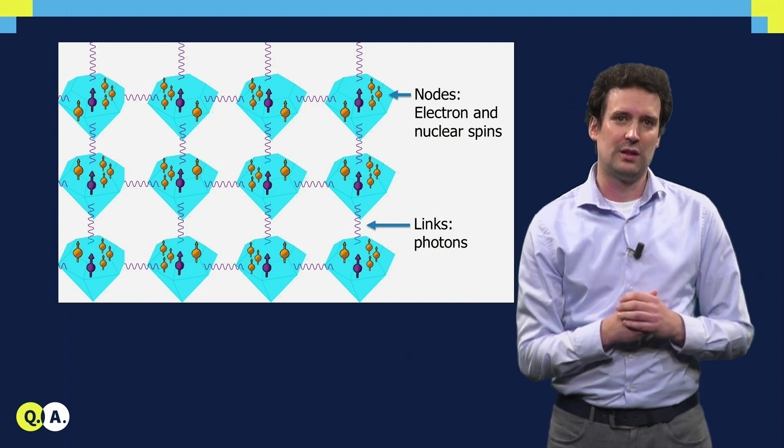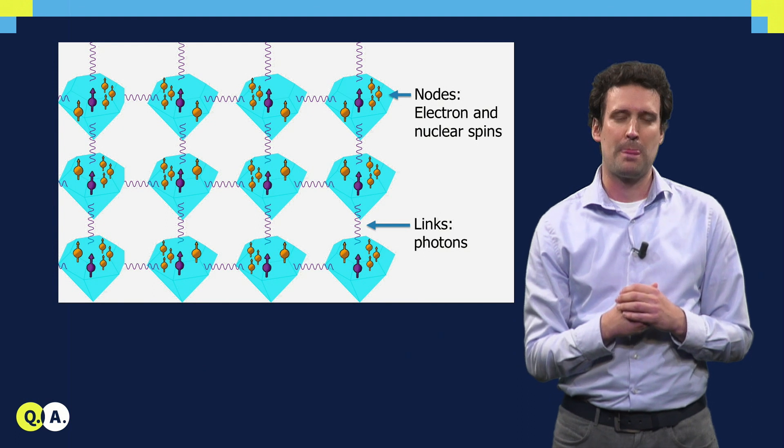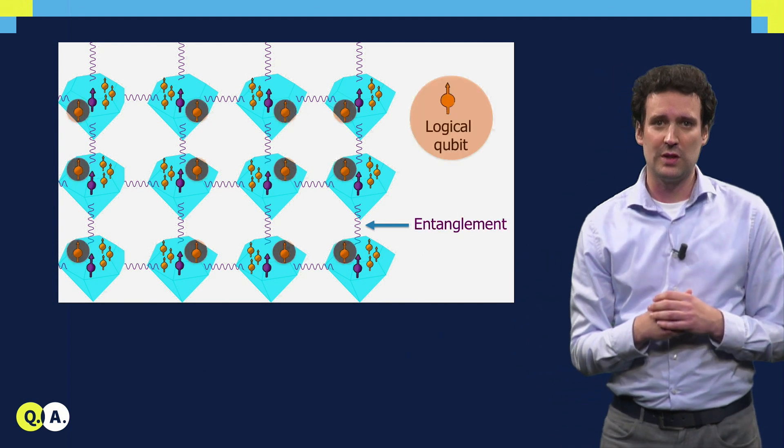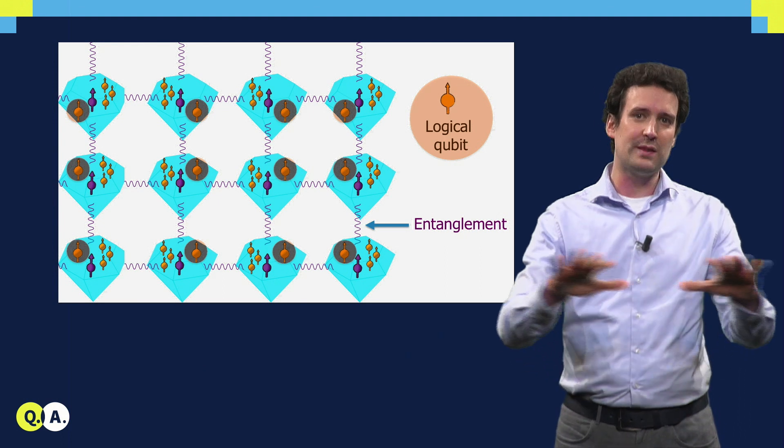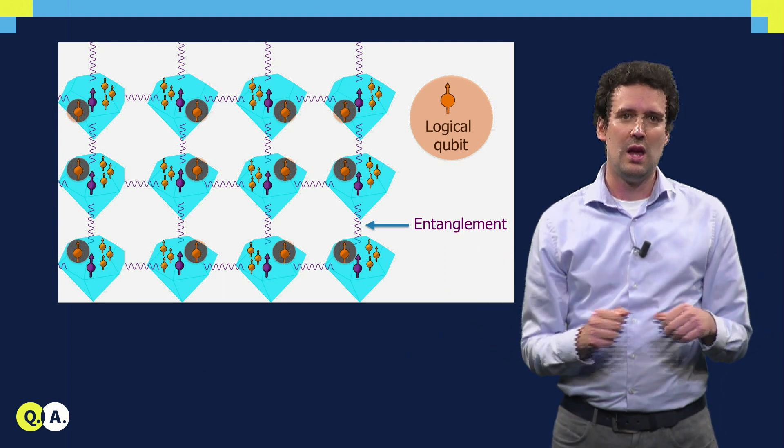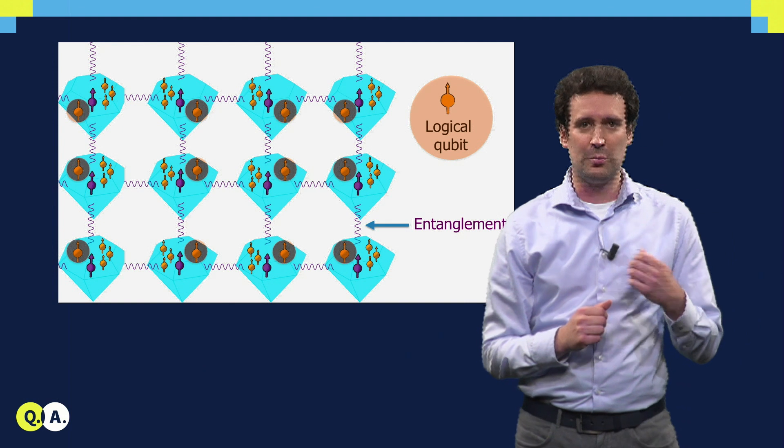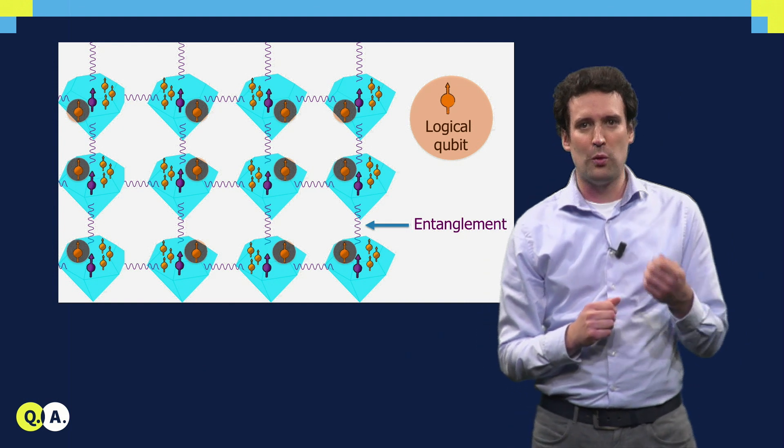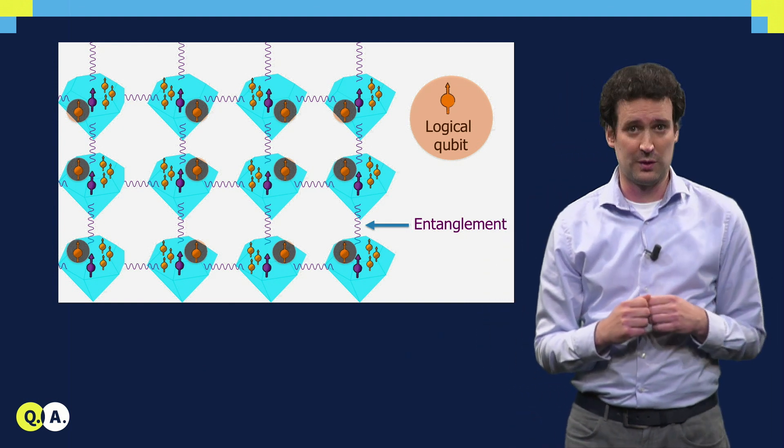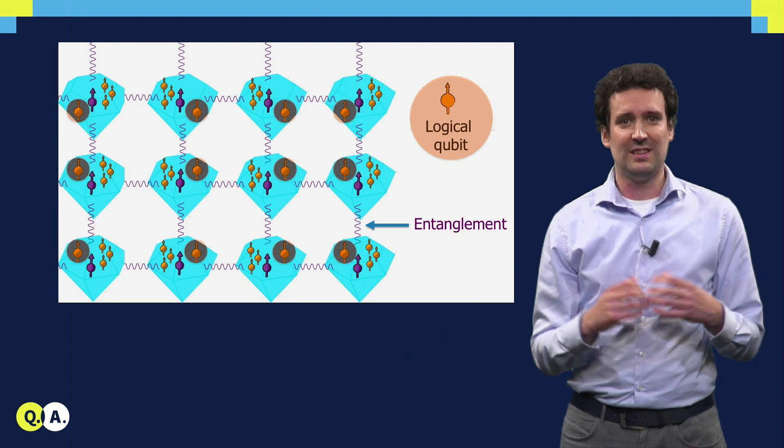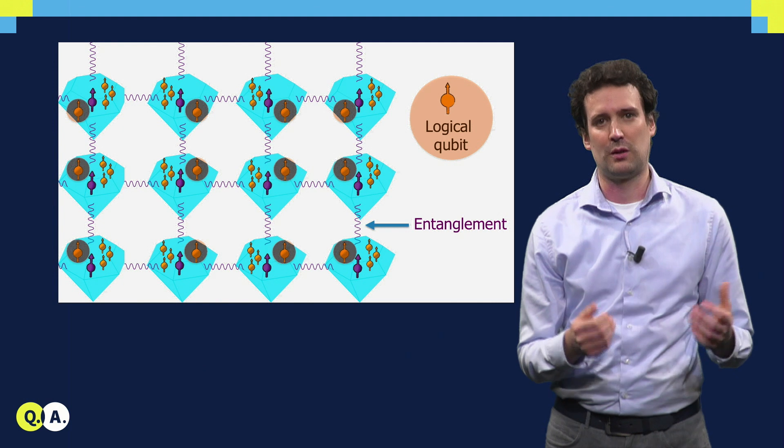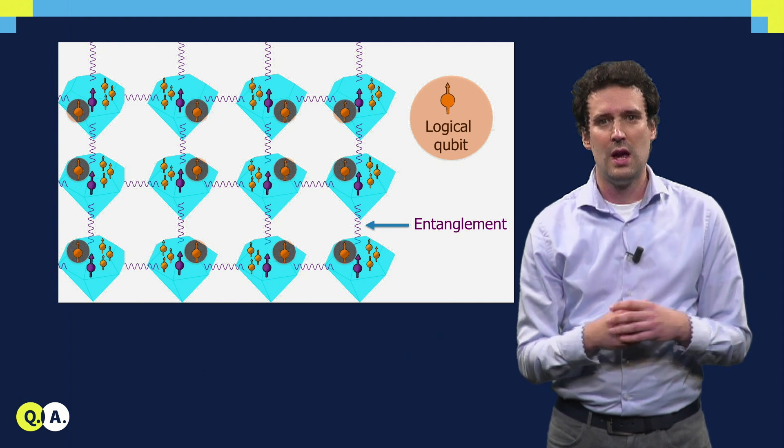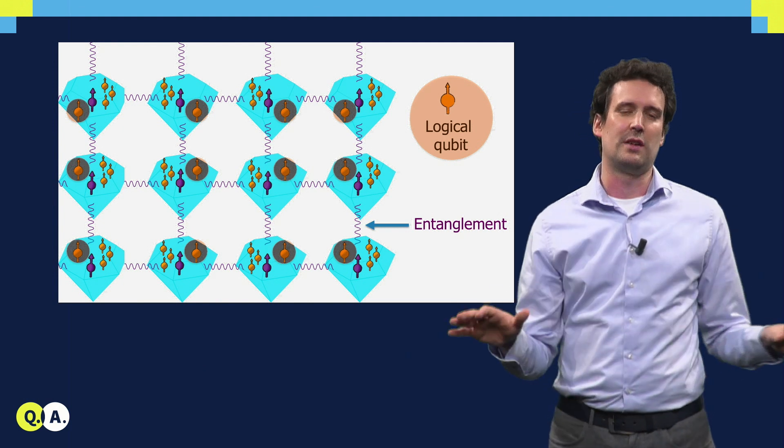So how does such a computation work in a network? The logical qubits, which actually hold the information of the computation, are spread out over the entire network. We use optical links to distribute quantum entanglement, and we store and process that entanglement in the rest of the qubits. These entangled states are then used as a resource to perform the error correction and the quantum computation, and these are also spread out over the entire network.